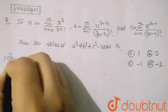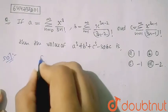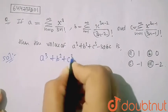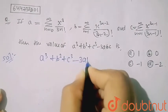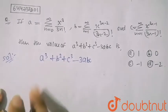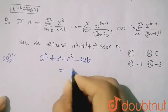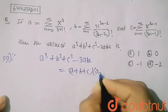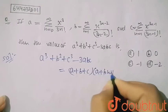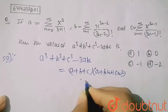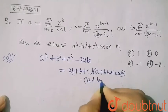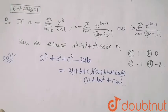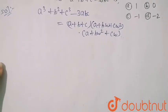So here we have to find the value of a³ + b³ + c³ - 3abc. This can be written as (a+b+c)(a+bω+cω²)(a+bω²+cω).